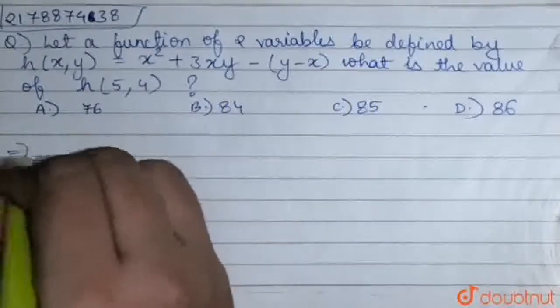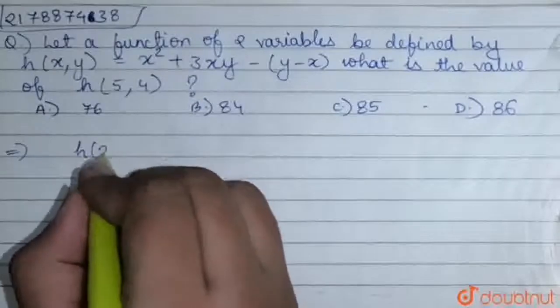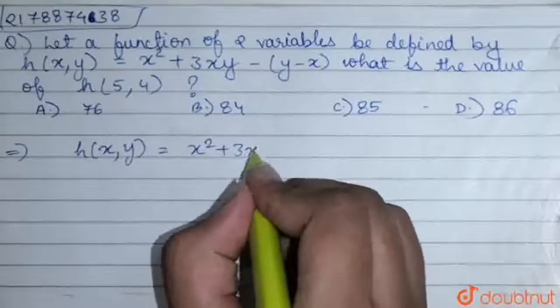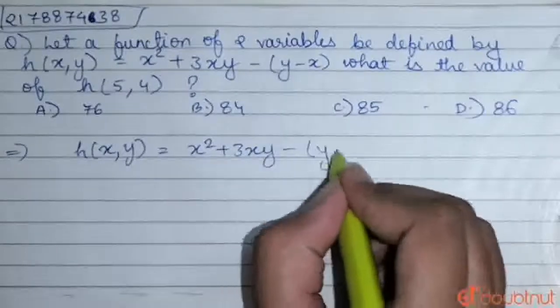Now, our expression is h of x, y equal to x square plus 3xy minus of y minus x.